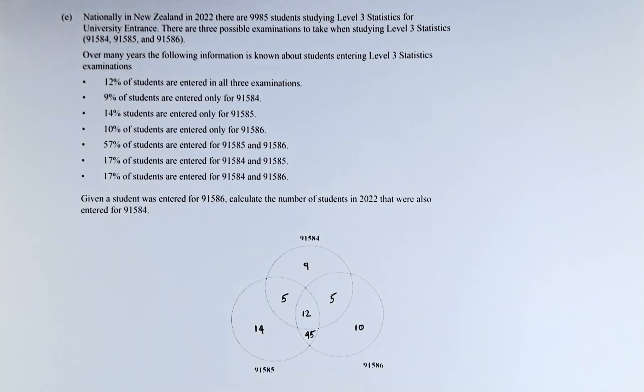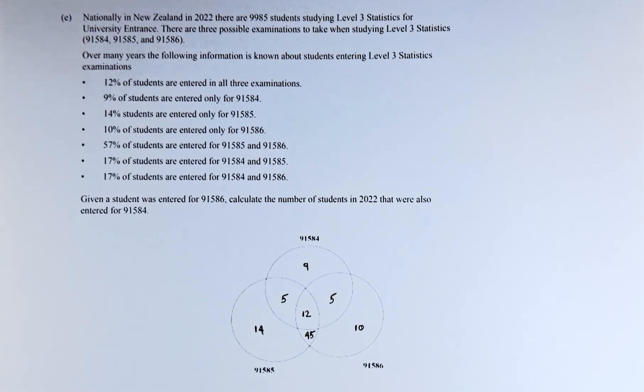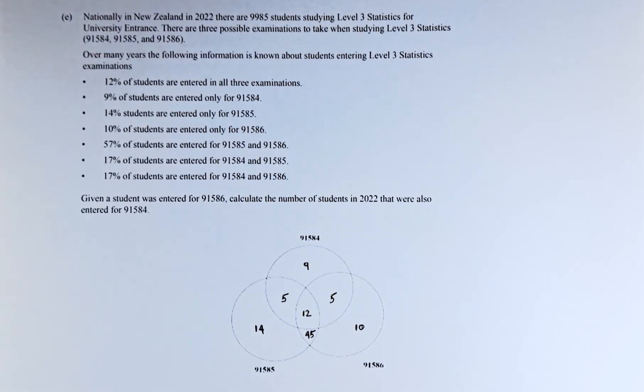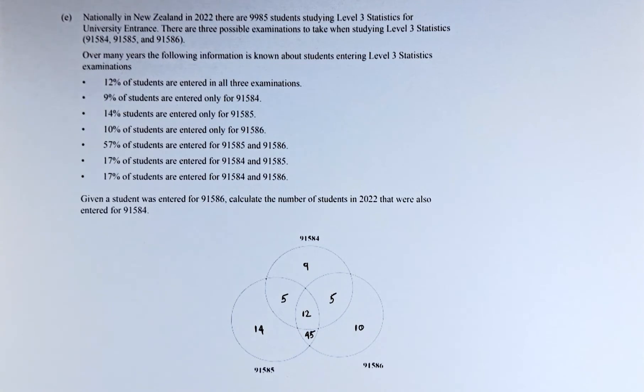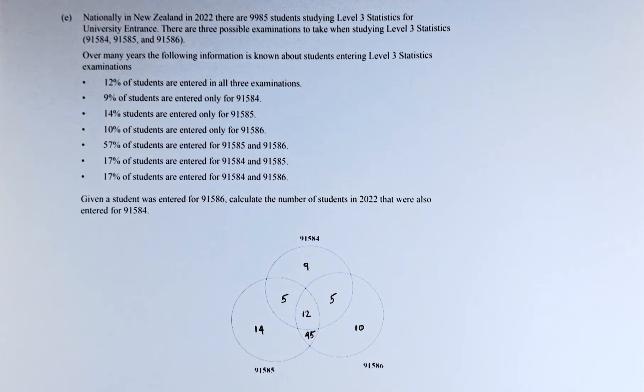Nationally, in New Zealand in 2022, there are 9,985 students studying Level 3 statistics for university entrance. There are 3 possible examinations to take when studying Level 3 statistics: 91584, that's the paper number, 91585, and 91586. Over the years, the following information is known about students entering Level 3 statistics examination.